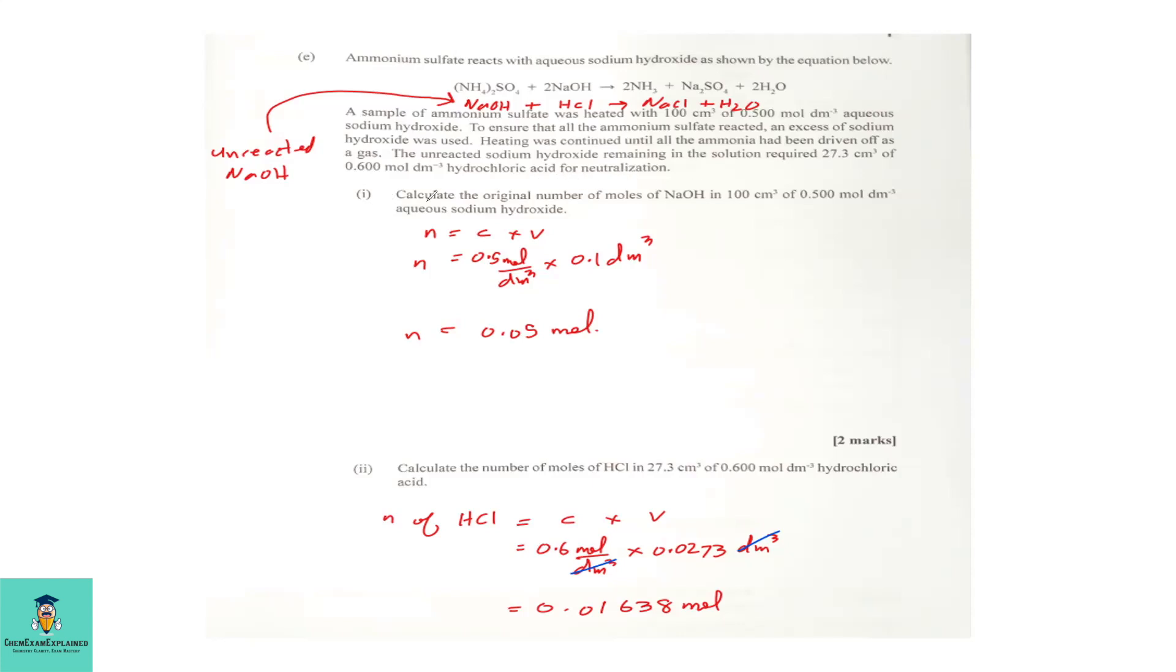Part 1. Calculate the original number of moles of sodium hydroxide in 100 cm³ of 0.500 moles per dm³ aqueous sodium hydroxide. To find the number of moles, we are going to use number of moles equal concentration times volume. The concentration in the original number of sodium hydroxide is 0.5 moles per dm³ times the volume of 100 cm³, which we converted to dm³ by dividing by 1,000. So 0.5 times 0.1 gives us 0.05 moles.